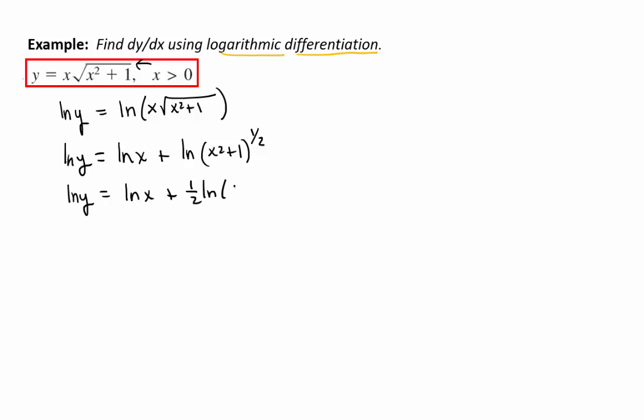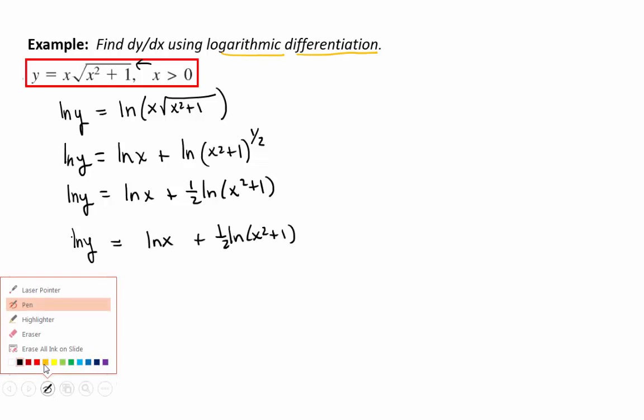And then use implicit differentiation to take the derivative on both sides. Let's see what happens. So I'm going to copy down my whole function, natural log of y, and I'm going to take the derivative of both sides. I want to find dy dx, so I'm going to differentiate with respect to x.